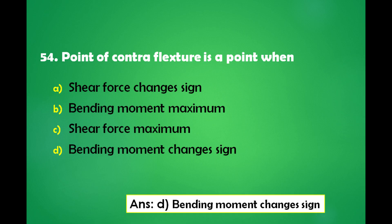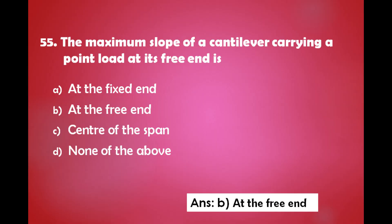The point of contraflexure is a point when: a) shear force changes sign, b) bending moment is maximum, c) shear force is maximum, d) bending moment changes sign. The answer is: the point of contraflexure is a point when the bending moment changes its sign.